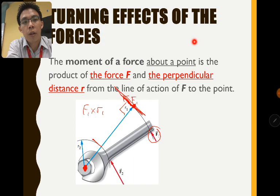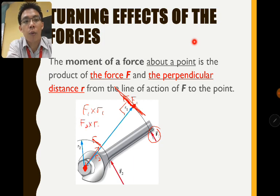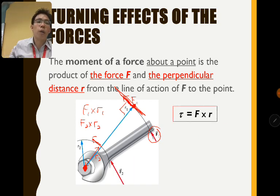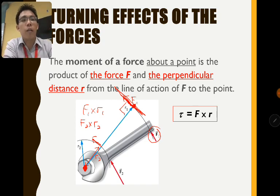Similarly, if you apply a force F2, the moment is F2 times r2. So the general equation is τ = F × r, where τ (tau) is the Greek letter representing the moment.